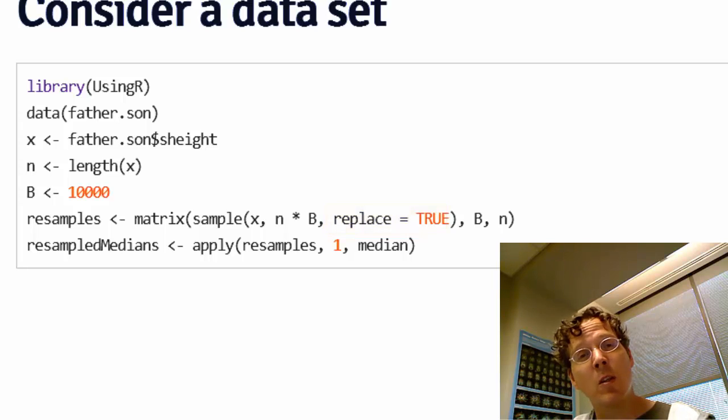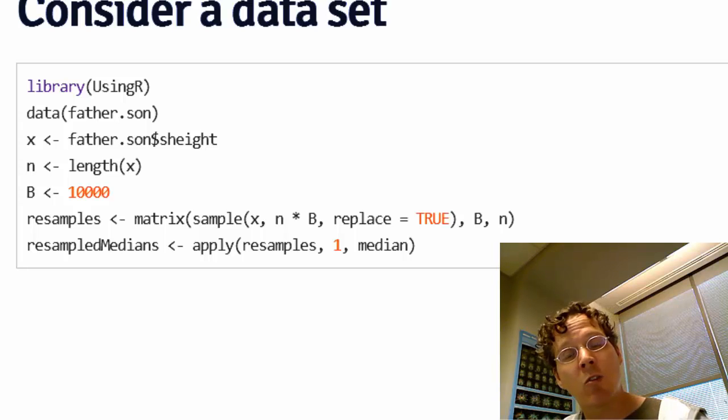So what is this? This is simulating from an empirical distribution defined by our data that puts probability 1 over n on each observed data point. This is called the empirical distribution.